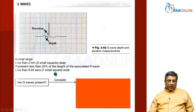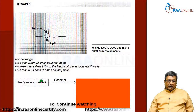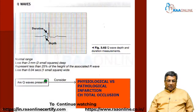Then we come to the QRS. Check whether any Q wave is present. Remember to distinguish physiological versus pathological Q waves. A pathological Q wave represents chronic total occlusion or myocardial infarction.